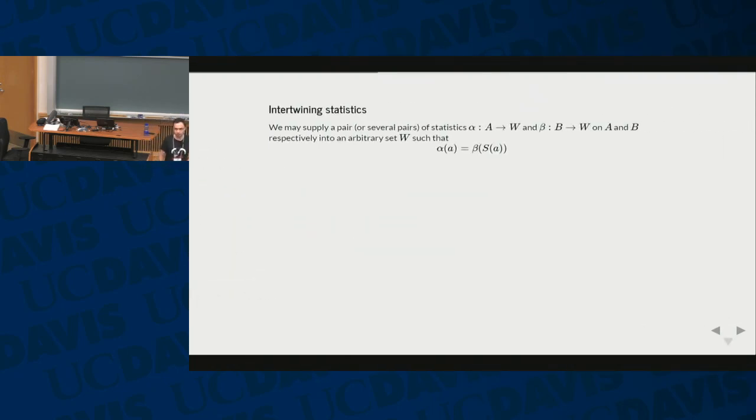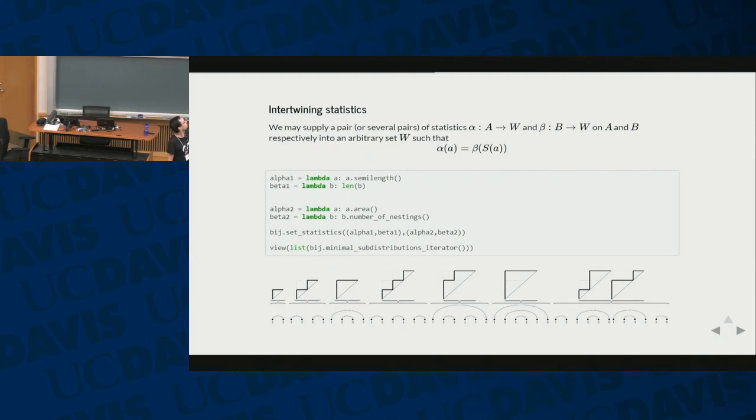So let's set some constraints. You can set intertwining statistics. So certainly what we want to do, we want to make this thing graded, so we now want to introduce the length. We set statistics alpha 1, beta 1 to be the length for the size of the objects. But there's also another one that's equidistributed, which is the area of the Dyck path. So you look at the number of fully contained 1 by 1 squares above the diagonal and below the path. This is the area, and for the non-crossing perfect matchings, we look at the number of nestings.